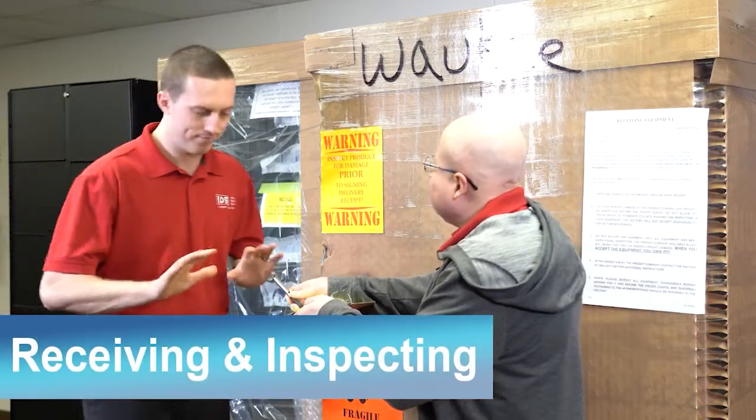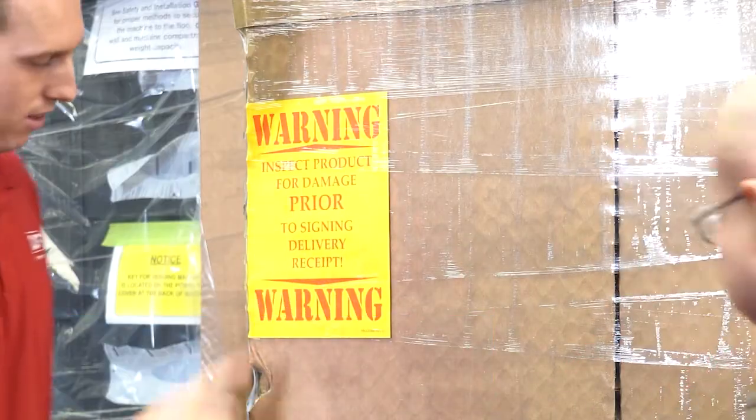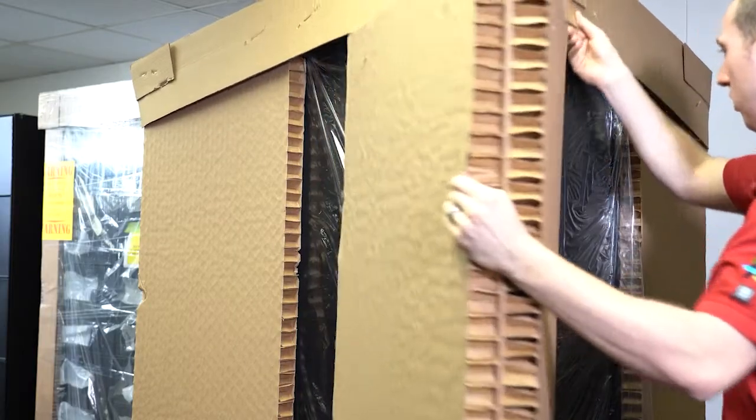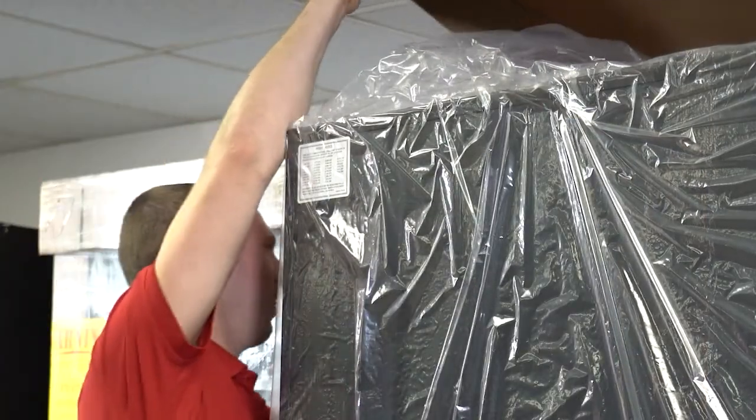Your machine was thoroughly inspected before leaving the factory, and the delivery carrier has accepted responsibility for this machine. It is very important that you inspect the exterior of all cartons for damage upon receipt from the freight line. Damage in transit, although infrequent, does happen.